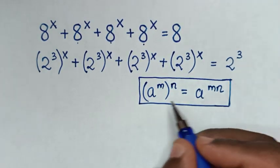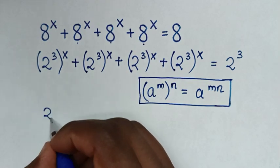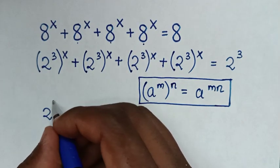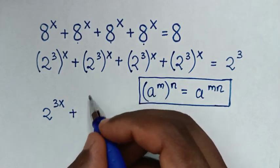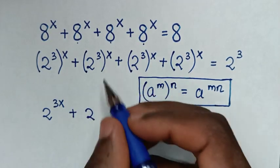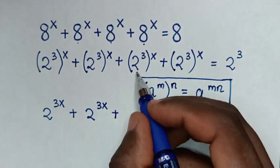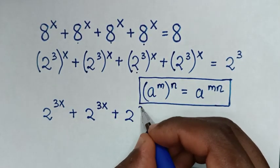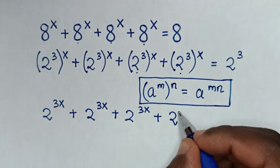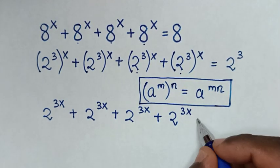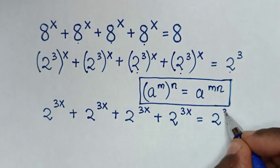So the multiplication of the powers gives us 2 power 3x for each term. The equation becomes 2 power 3x plus 2 power 3x plus 2 power 3x plus 2 power 3x is equal to 2 power 3.